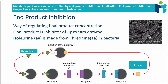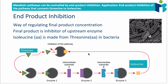End product inhibition is where you have a chain — a metabolic pathway where one thing is converted into another and another, by a series of enzymes — where the final product of this metabolic chain acts as an allosteric inhibitor of one of the upstream enzymes, one of the enzymes that worked to produce it in the first place. It does this by non-competitive inhibition, which we talked about in the previous video.